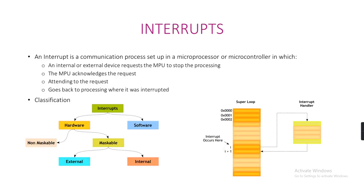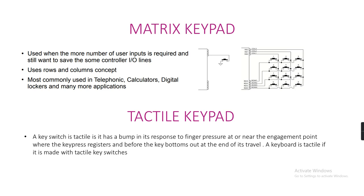An interrupt is a communication process set up in a microprocessor or microcontroller in which an internal or external device requires the MPU to stop its current processing and attend to the request. Interrupts are classified into two types: hardware and software. Hardware interrupts are further classified into non-maskable and maskable, and maskable is further classified into external and internal.